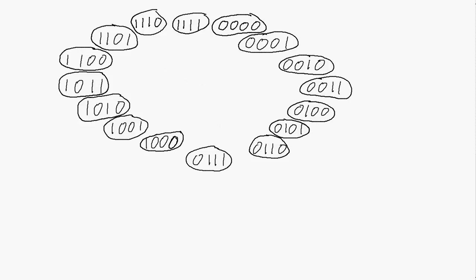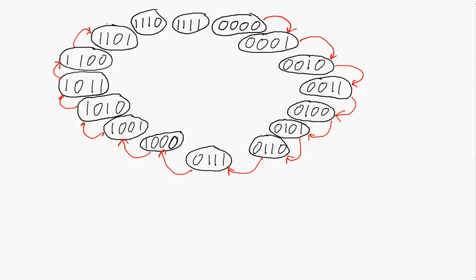We have all 16 states for a 4-bit counter. The state transitions are very simple: if you're in state 0000, on the signal to change states, you move to 0001. Then the next signal takes you to 0010, then 0011, then 0100 (which is 4), and then 5, 6, 7, 8, 9, 10, 11, 12, 13, 14, 15, and then back to 0.